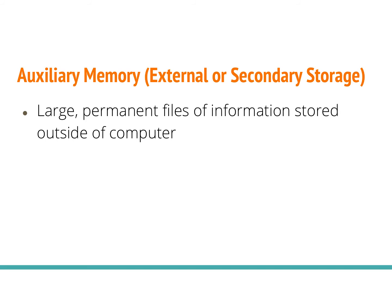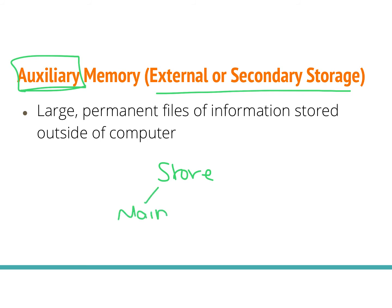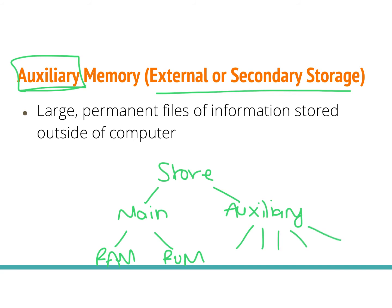Now that we've talked about main memory, let's move on to external or secondary storage called auxiliary memory. Remember, you have storage that splits into main, which is internal, and auxiliary, which is external. Main splits into RAM and ROM, and auxiliary is going to split into five different types of auxiliary memory that is external to your computer.